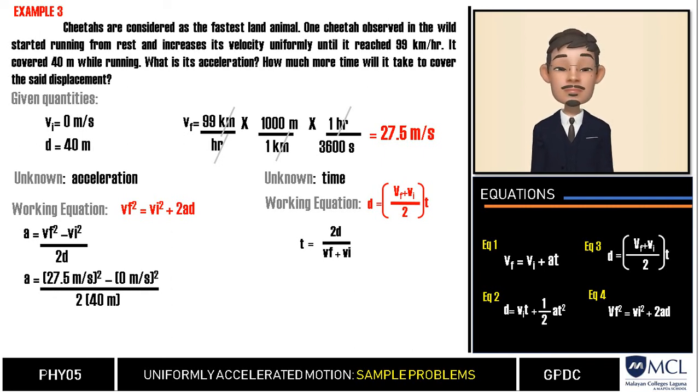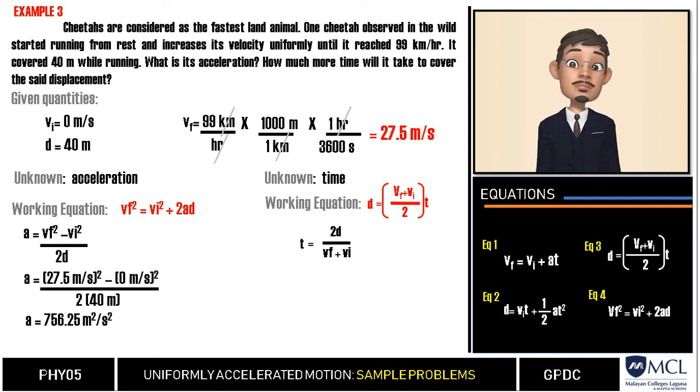When we square 27.5 meters per second, our answer is 756.25 meters squared per second squared. Do not forget to square as well the units because they are all part of the values inside our parenthesis. It is easier for us to see if we are on the right track of solving physics problems because when we cancel the units, and what is left is the intended unit for the unknown quantity, then the chances are high we are doing our computations well.